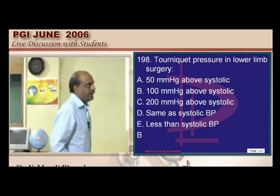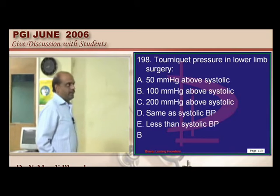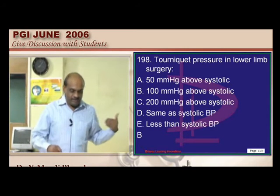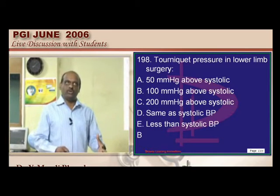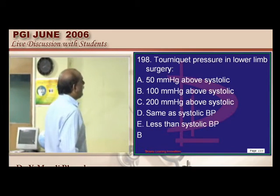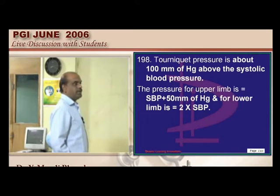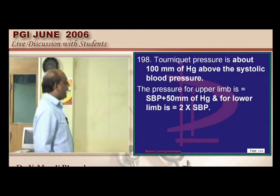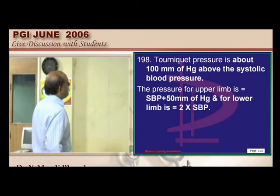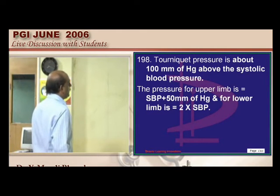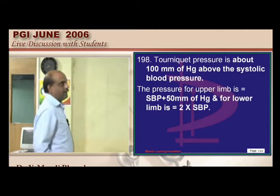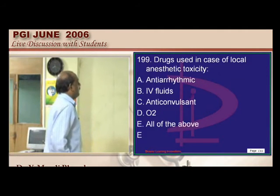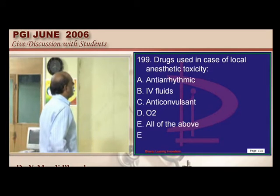For tourniquet pressure to prevent venous return from the lower limb: approximately 100 mmHg above systolic blood pressure should be applied. For the upper limb, it is systolic blood pressure plus 50 mmHg. These are the pressures to apply for the tourniquet.